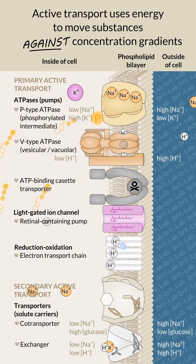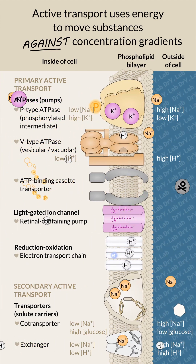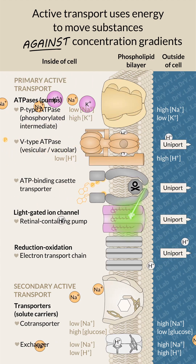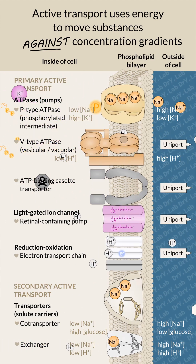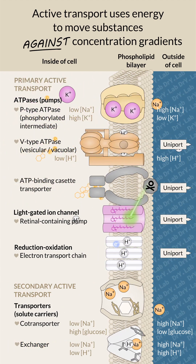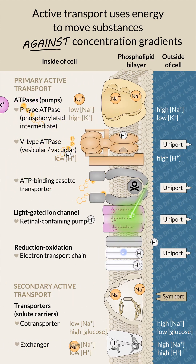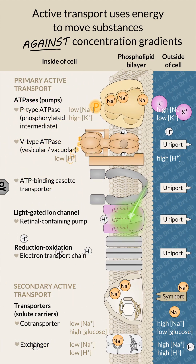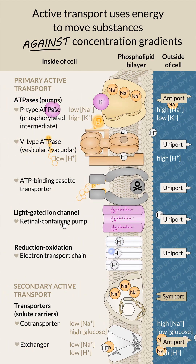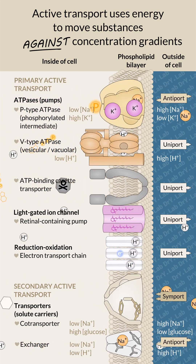Transporters that move only one type of solute are called uniporters. When transporting two types of solutes, symporters transport both in the same direction, while antiporters transport them in opposite directions.